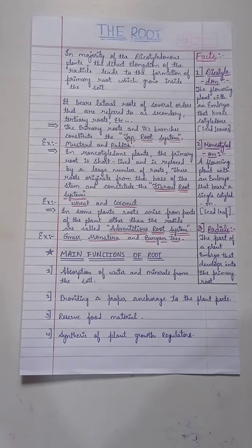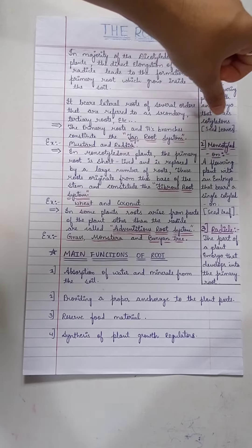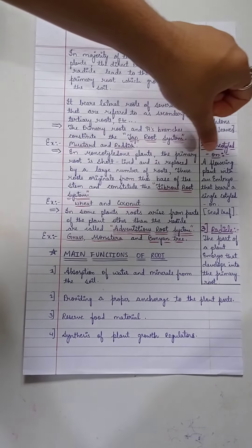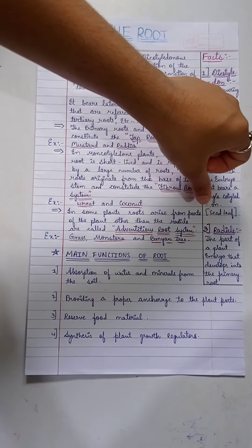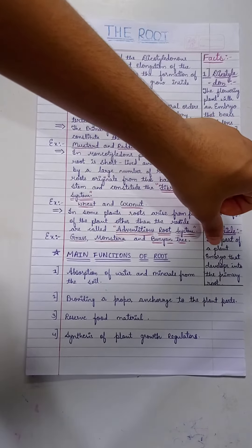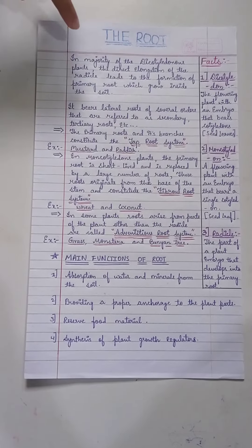First one is the dicotyledon: the flowering plant with an embryo that bears two cotyledons, that is seed leaves. Second is monocotyledon: a flowering plant with an embryo that bears a single cotyledon, that is a seed leaf. Next is the third point, the radical: the part of a plant embryo that develops into a primary root.